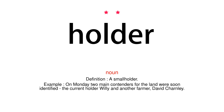Noun. Definition: A smallholder. Example: On Monday two main contenders for the land were soon identified — the current holder Willie and another farmer, David Charnley.